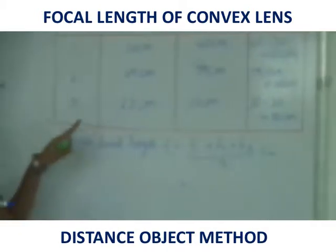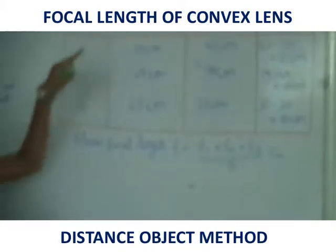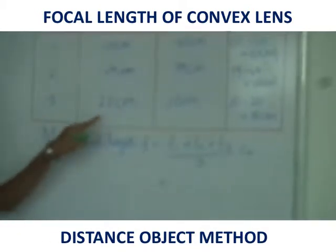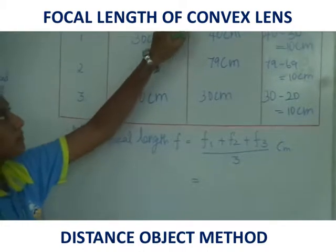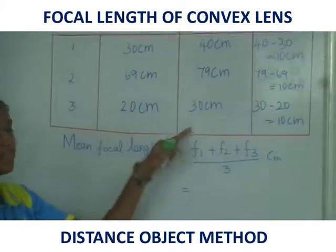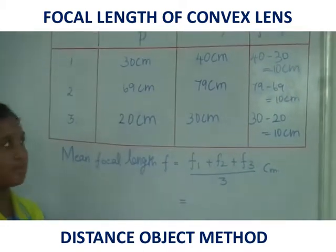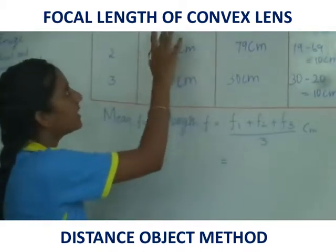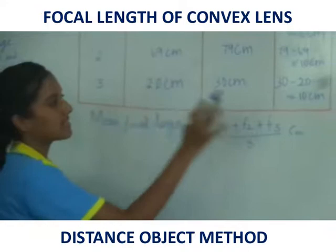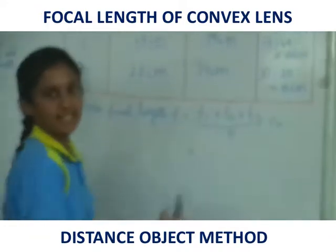In the third reading, the position of the convex lens is 20 cm and the position of the screen is 30 cm. The difference between the screen and the convex lens is 10 cm.